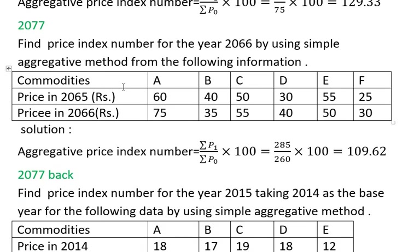We have covered a 3 or 4 part system of aggregate price index numbers. We will have a short question to prepare and conclude this topic.